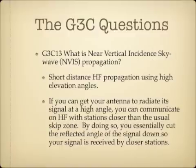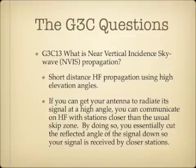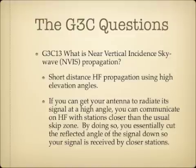What is near-vertical incident skywave propagation? It is short-distance HF propagation using high elevation angles. If you can get your antenna to radiate its signal at a high angle, you can communicate on HF with stations closer than the usual skip zone. By cutting the angle down steeply, you get a bounce closer to you than normal skywave propagation, essentially shortening the reflected distance so your signal is received by closer stations.